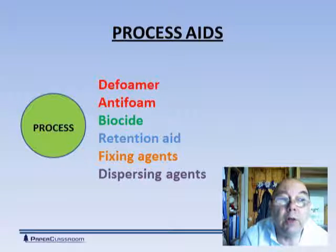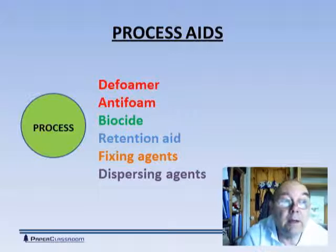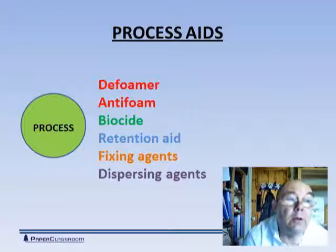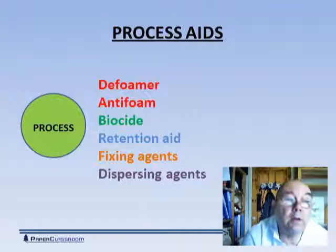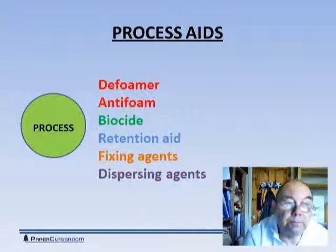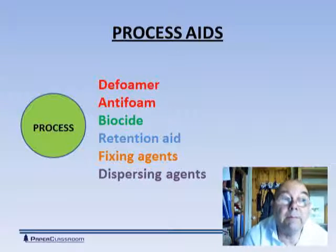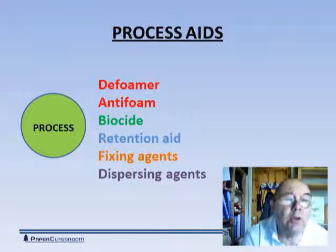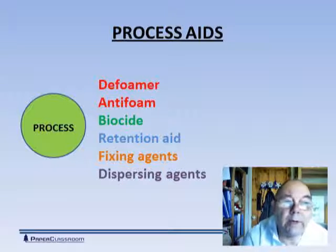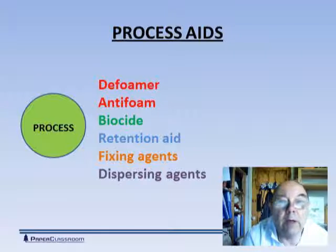Biocides. As mentioned earlier, the basic building block of cellulose is glucose, and glucose is the perfect food for almost all bacteria. So with glucose there, bacteria around, a warm wet environment, and lots of oxygen — it's the perfect breeding ground for bacteria. It is therefore essential to have bactericides there to kill off as much bacteria as possible, which will reduce the formation of stickies and slime.